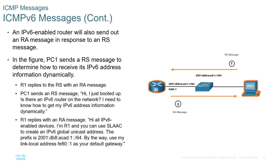A computer will send a Router Solicitation as soon as it boots up and needs network information. The router will send out a Router Advertisement message to everyone with the network information they need. Everyone that receives that RA message will process it to make sure nothing has changed — that the prefix, default gateway, and any other network information remains the same.